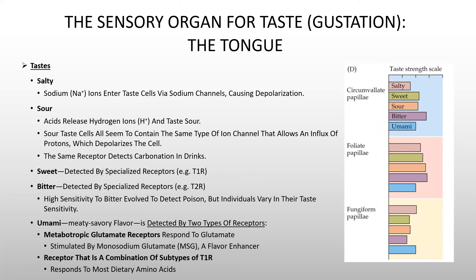For salty taste, sodium ions enter cells via sodium channels causing depolarization — sodium wants in based upon the electrostatic gradient and diffusion. For sour taste, acids release hydrogen ions; sour taste cells contain ion channels that allow an influx of protons, which depolarizes the cell because they are positively charged ions. The same receptor also detects carbonation in drinks.